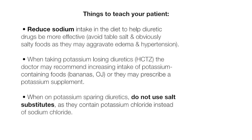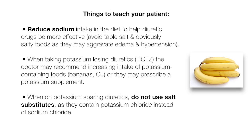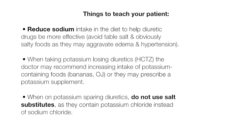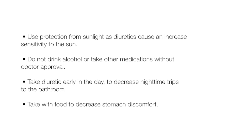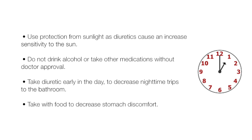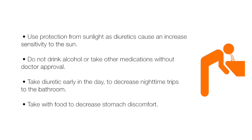Important things to teach your patient: reduce sodium intake in the diet to help diuretic drugs be more effective, and avoid table salt and salty foods as they may aggravate edema and hypertension. When taking potassium-losing diuretics like HCTZ, the doctor may recommend increasing intake of potassium-containing foods like bananas or orange juice, or may prescribe a potassium supplement. When on potassium-sparing diuretics, do not use salt substitutes as they contain potassium chloride. Use protection from sunlight as diuretics cause increased sensitivity to the sun. Do not drink alcohol or take other medications without doctor approval. Take the diuretic early in the day to decrease nighttime trips to the bathroom, and take with food to decrease stomach discomfort.